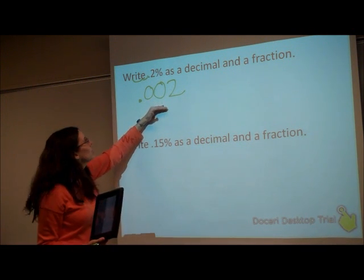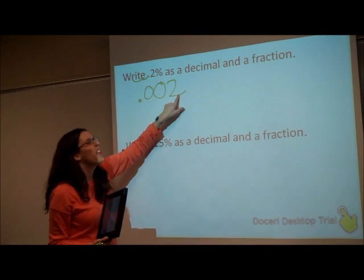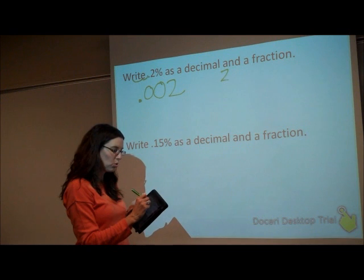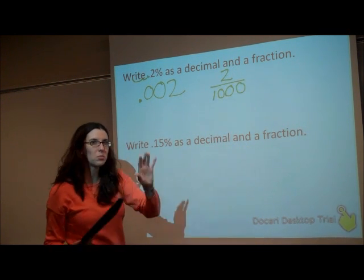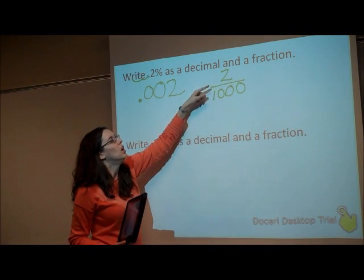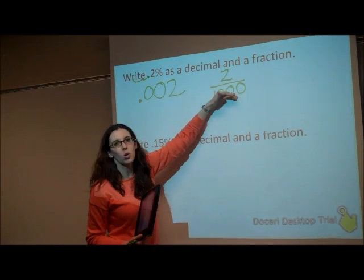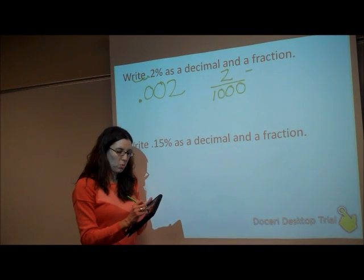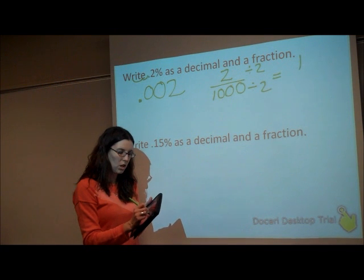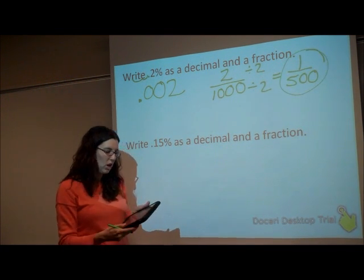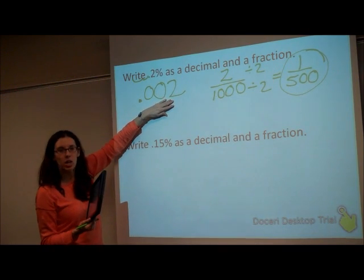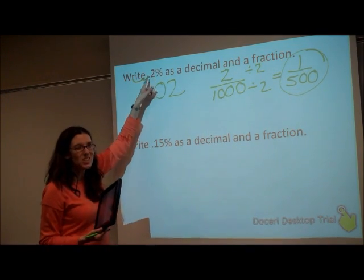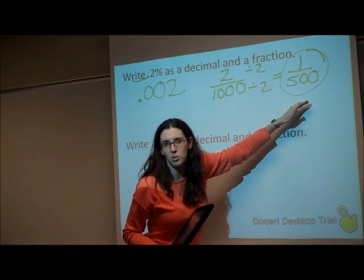Now, going to a fraction — let's look at this. Tenths, hundredths, thousandths. Think of our place value. So this will be two thousandths. We did this back when we talked about fractions and decimals. So this decimal is equivalent to this fraction: two over a thousand. Let's simplify — we can divide both by 2, and it's one over 500. So as a decimal it's 0.002, and as a fraction it's 1 over 500. If it's a very small percent, it's going to be a very small decimal and a very small fraction.